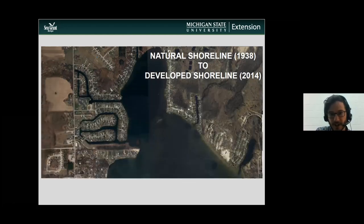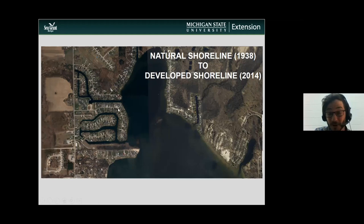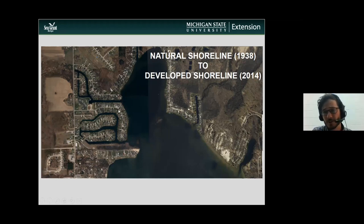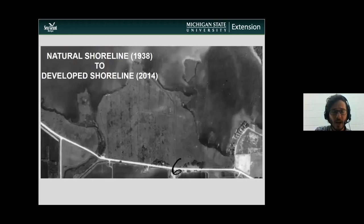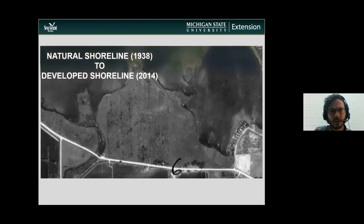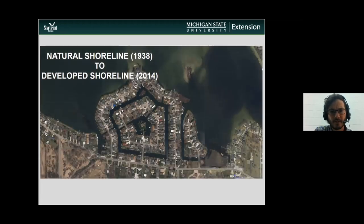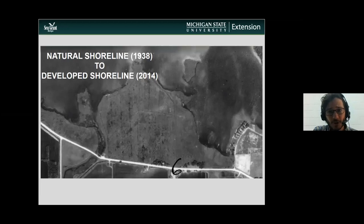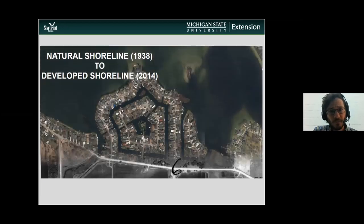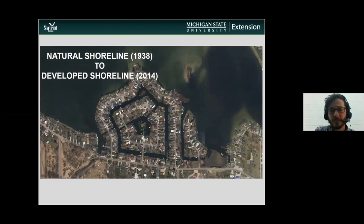That wetland complex has changed completely. It was channelized and then developed with homes on what look like 50-foot-wide lots. A lot of development occurred and much of that natural shoreline was lost, as was the wetland itself. Looking at the southern part of the lake — another wetland in 1938 — and here it is in 2014: a quite dramatic, almost total loss of wetland, now fully built up.